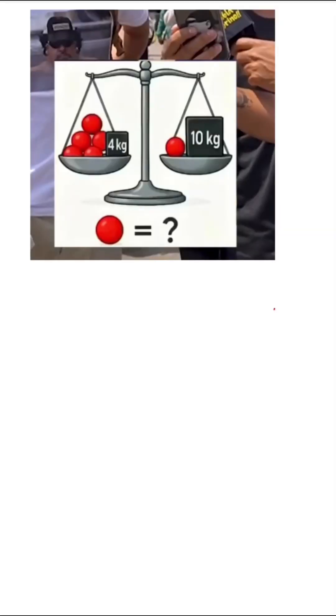First thing we need to do is realize what's going on in the situation. Right now we have a perfectly balanced scale. What that means is the same weight that's over here has to be the same weight over here to keep this balanced. So essentially I can make two equations and set them equal to each other.